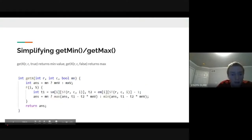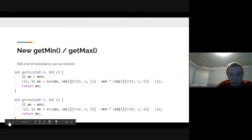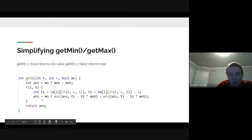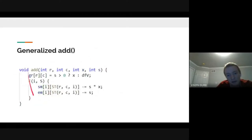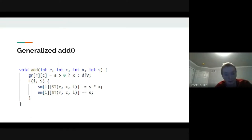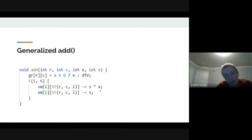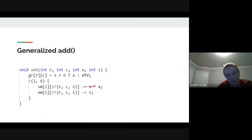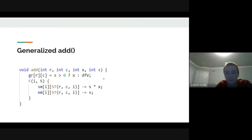The generalized add function updates sum constraints in a loop: for each component i, sm[i][st(r,c,i)] −= s×x and empt[i][st(r,c,i)] −= s. This handles both placing (s=1) and removing (s=−1) a value uniformly.